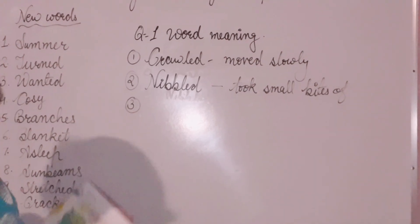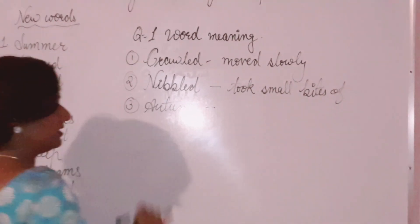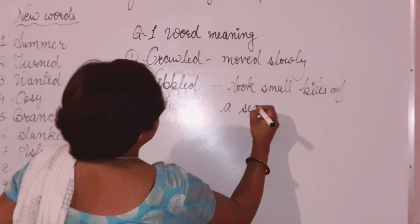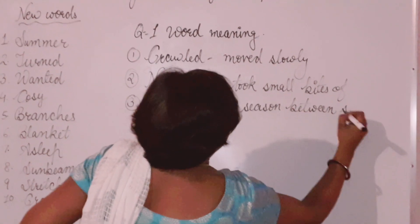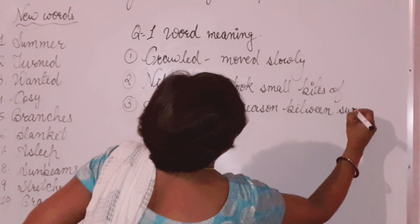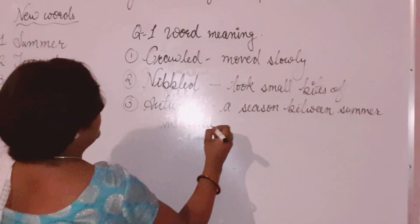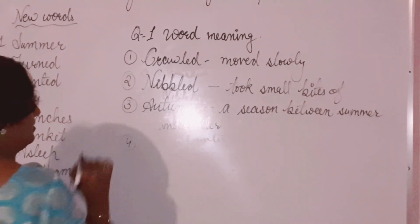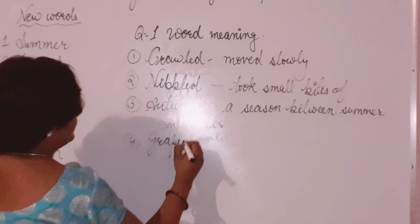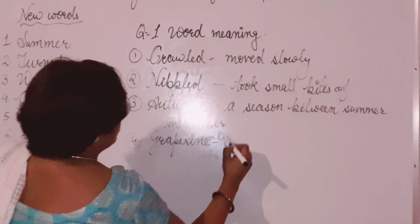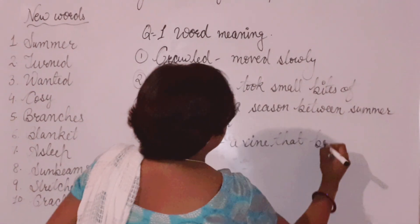The third word is autumn — it is the name of a season, a season between summer and winter, summer aur winter ke beech mein aane wala season. The fourth word is grapevine — a vine that bears grapes, yani angur ki bel.